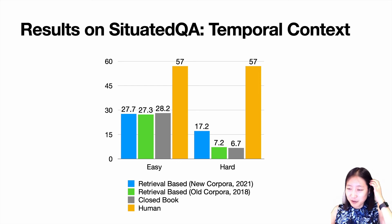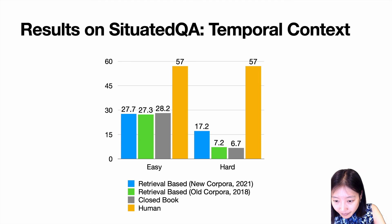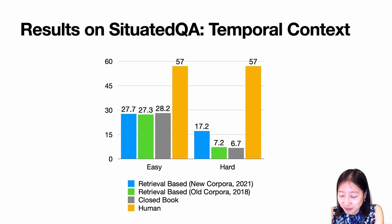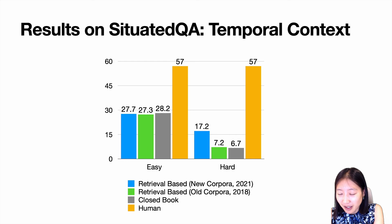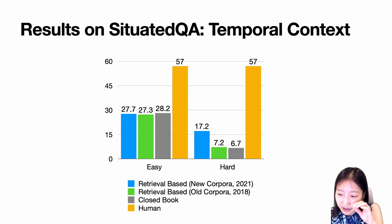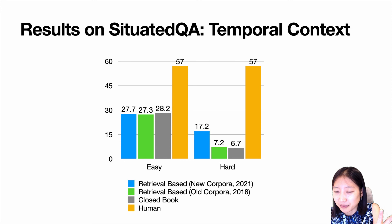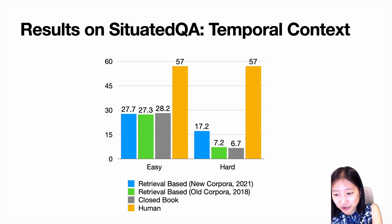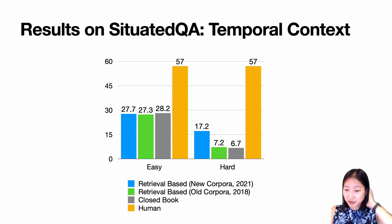Here are the results. Humans perform consistently across both subsets. For closed-book models with no access to new documents, pre-trained up to about 2019, performance dropped significantly on the harder subset requiring up-to-date knowledge. For retrieval-based models using the old 2018 corpus, there's a large drop between easy and hard questions. But when given a newer corpus to retrieve from, performance improved significantly — though still about 10 points worse on questions where facts have been updated. There appear to be temporal artifacts affecting model performance.